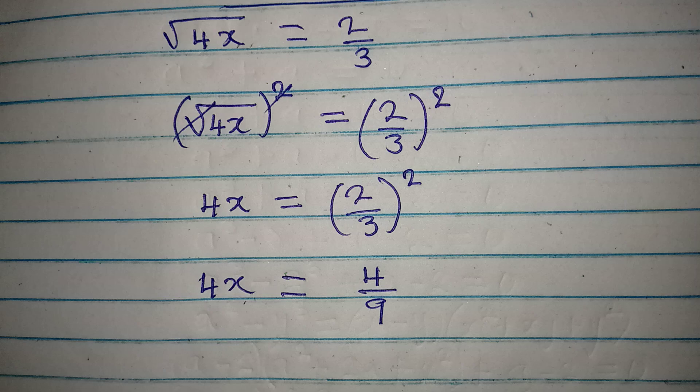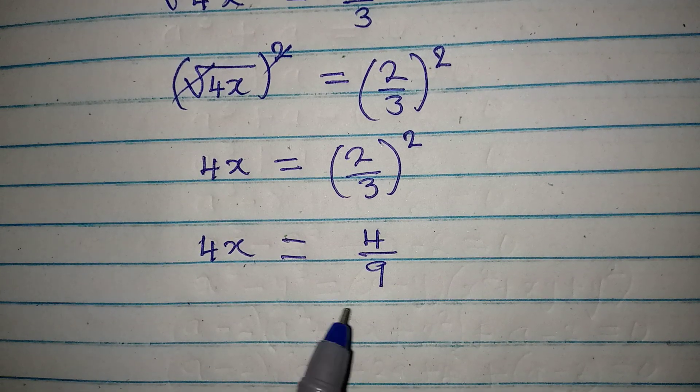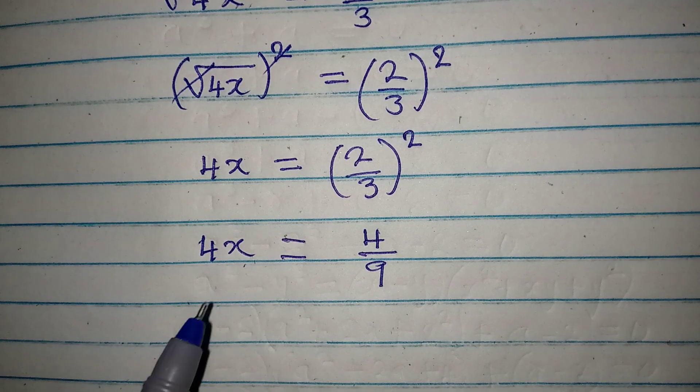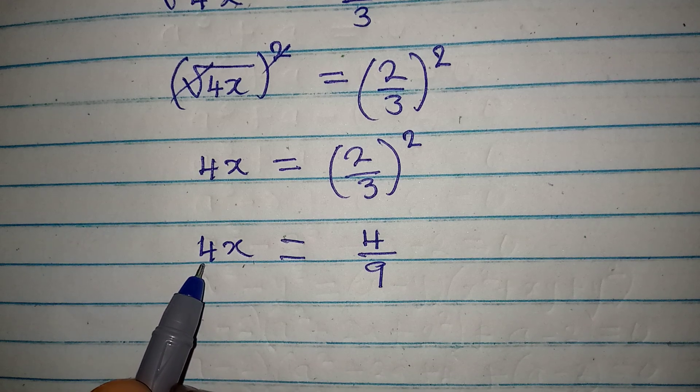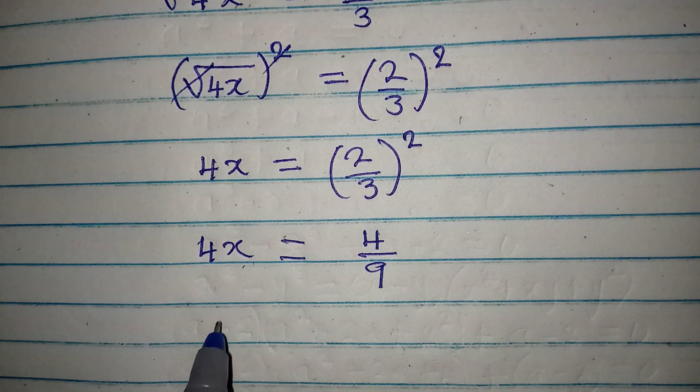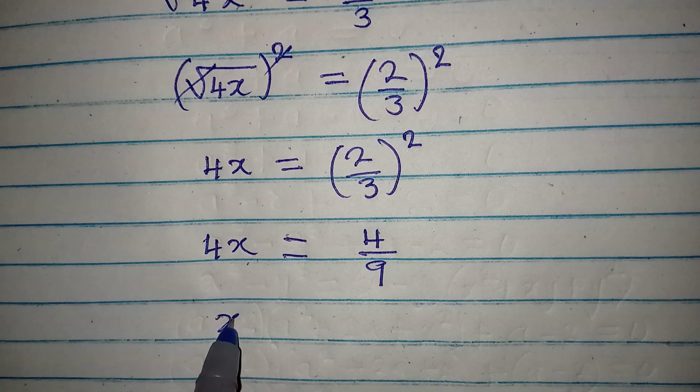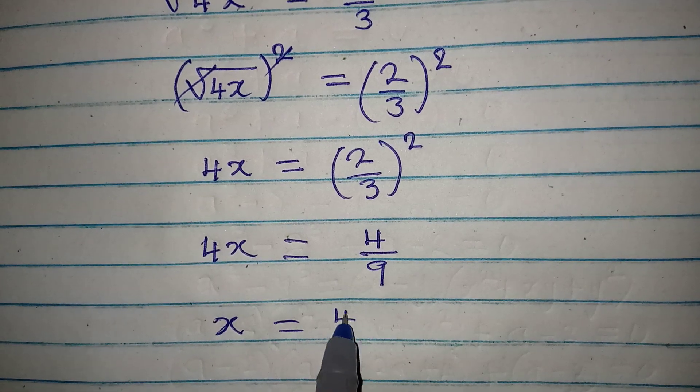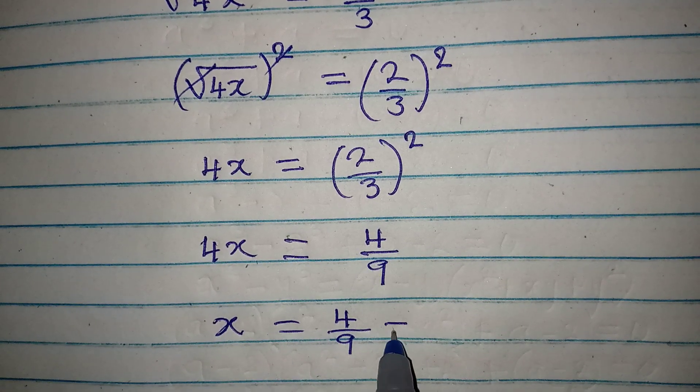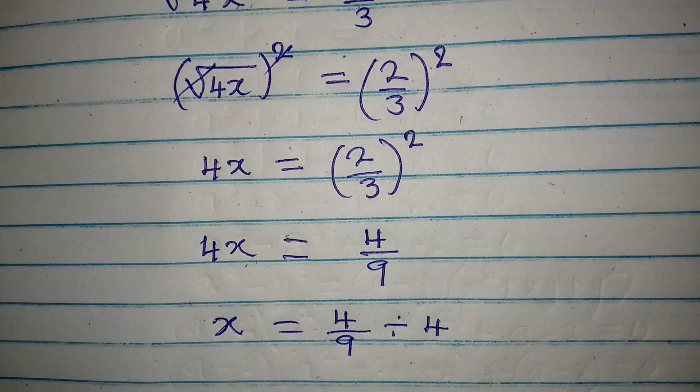Now the next thing is to divide both sides by 4. So if I do that, I'm going to have x to be equal to 4 over 9 divided by 4, right, because I'm dividing both sides by 4.